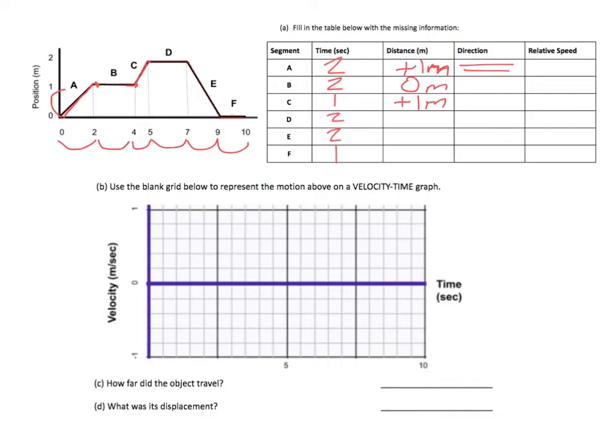For D, it starts at two, finishes at two. It hasn't gone anywhere. That's zero meters. For E, it's gone from positive two to zero. So that's negative two meters. And that's the negative direction. And for F, it's basically stayed still, zero meters.